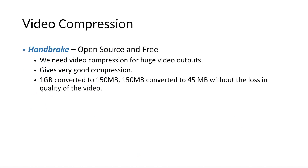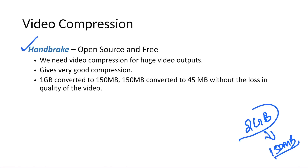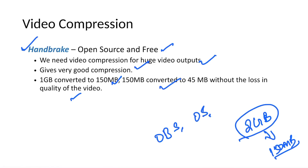For video compression, after generating a video — say 2 GB in size — a tool called Handbrake can compress it down to around 150 MB or even 45 MB without any loss in video quality. Uploading large files to third-party video channels consumes more bandwidth, so scaling down file size using Handbrake is recommended. Handbrake is open source and free, and gives very good compression for large video outputs.